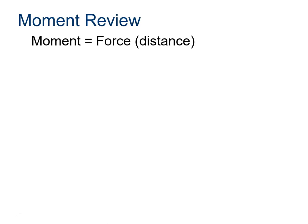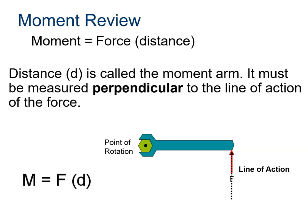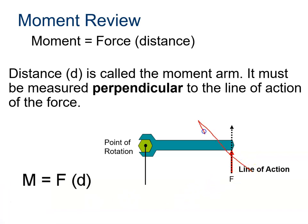A moment — not a moment in time — is defined as a force times a distance. A common everyday term for a moment is torque. You might know how to use a wrench. An important thing to know is that the distance in 'moment = force × distance' must be perpendicular to the line of action. Here we have a wrench with a line of action rotating about a rotation point. That perpendicular distance follows the direction perpendicular to that line of action.